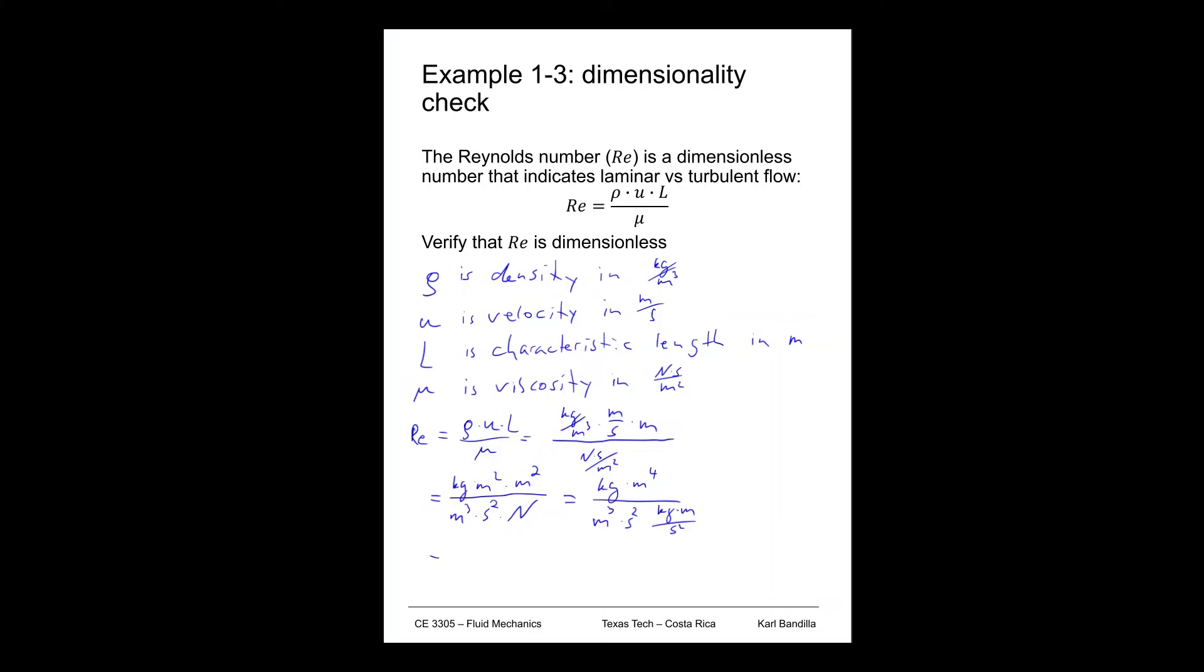So that gives us kilograms times meter to the fourth divided by meter to the fourth. That's the meter cubed here and there. The seconds cancel out times kilogram. And of course, here the terms are all cancelled out. We have kilogram meter to the fourth divided by meter to the fourth times kilogram. So that's all equal to one.